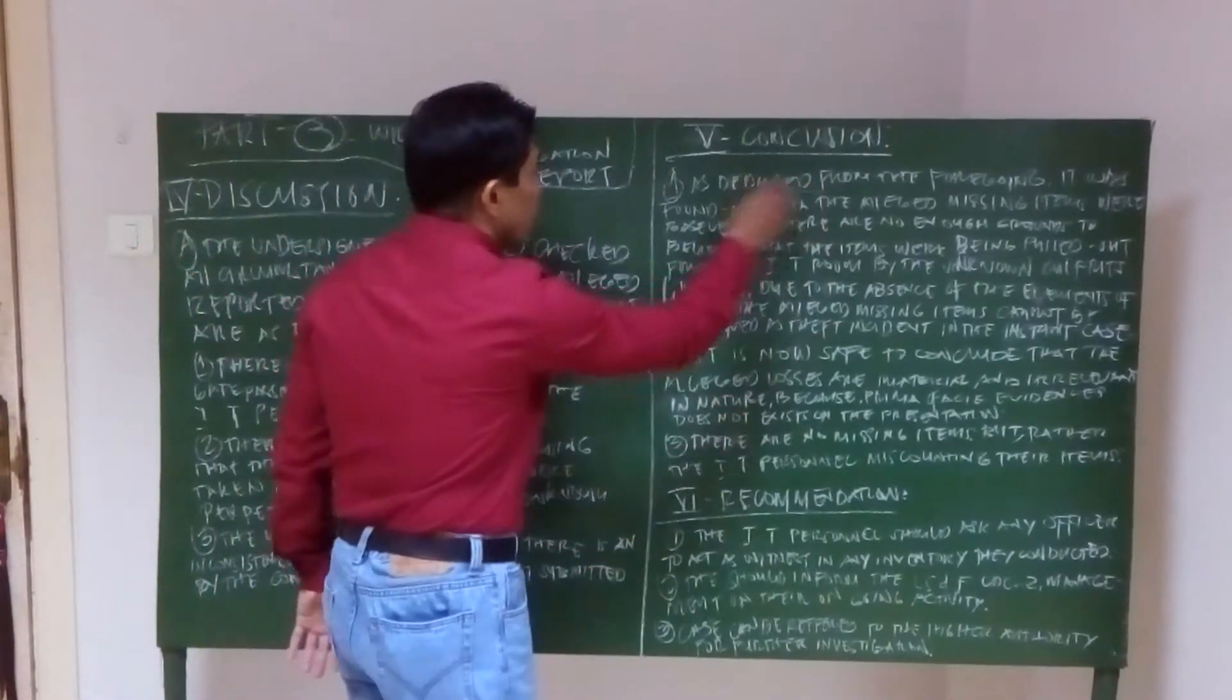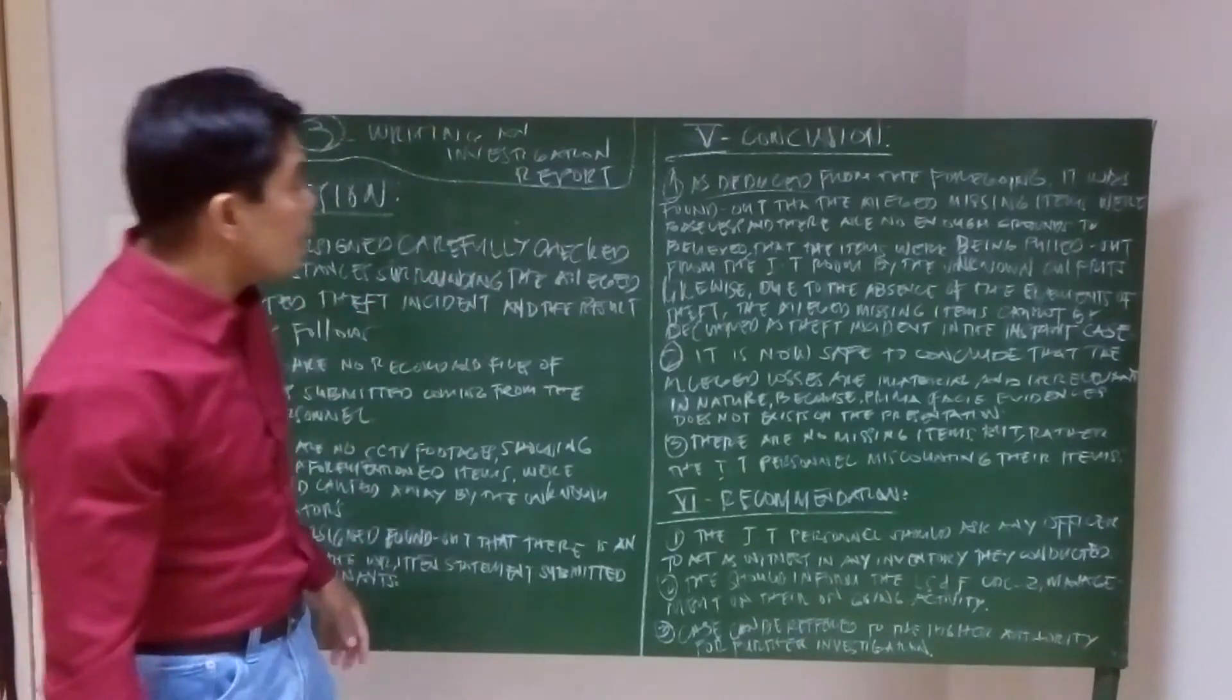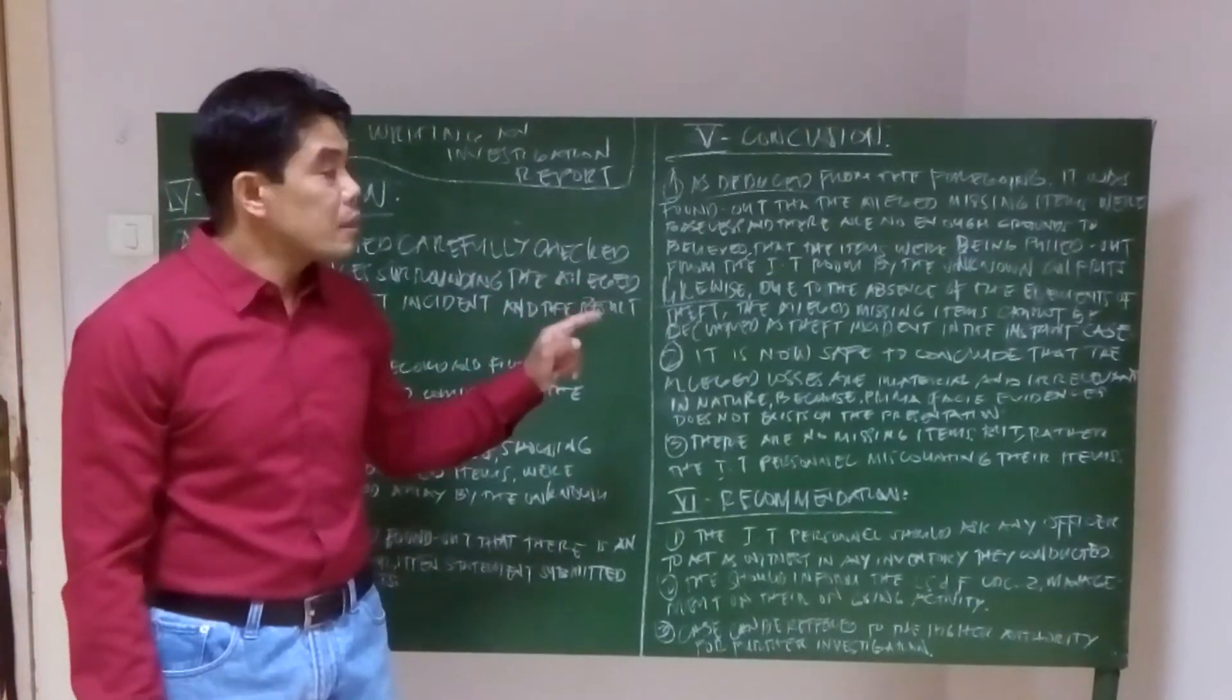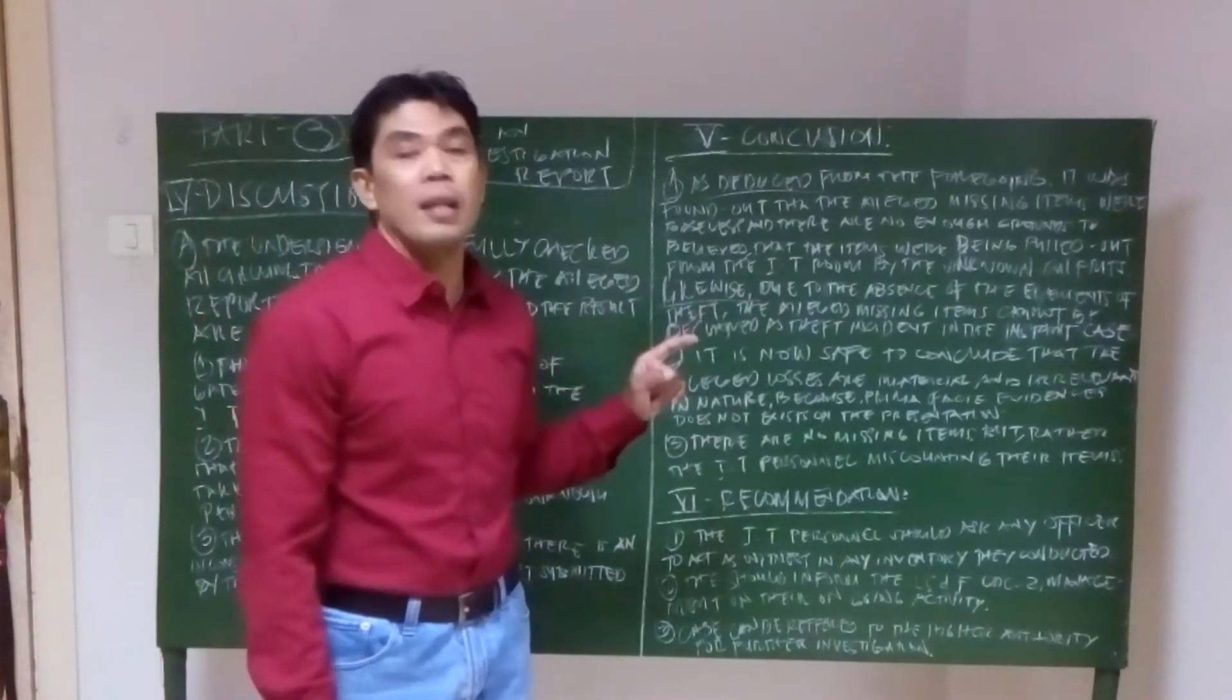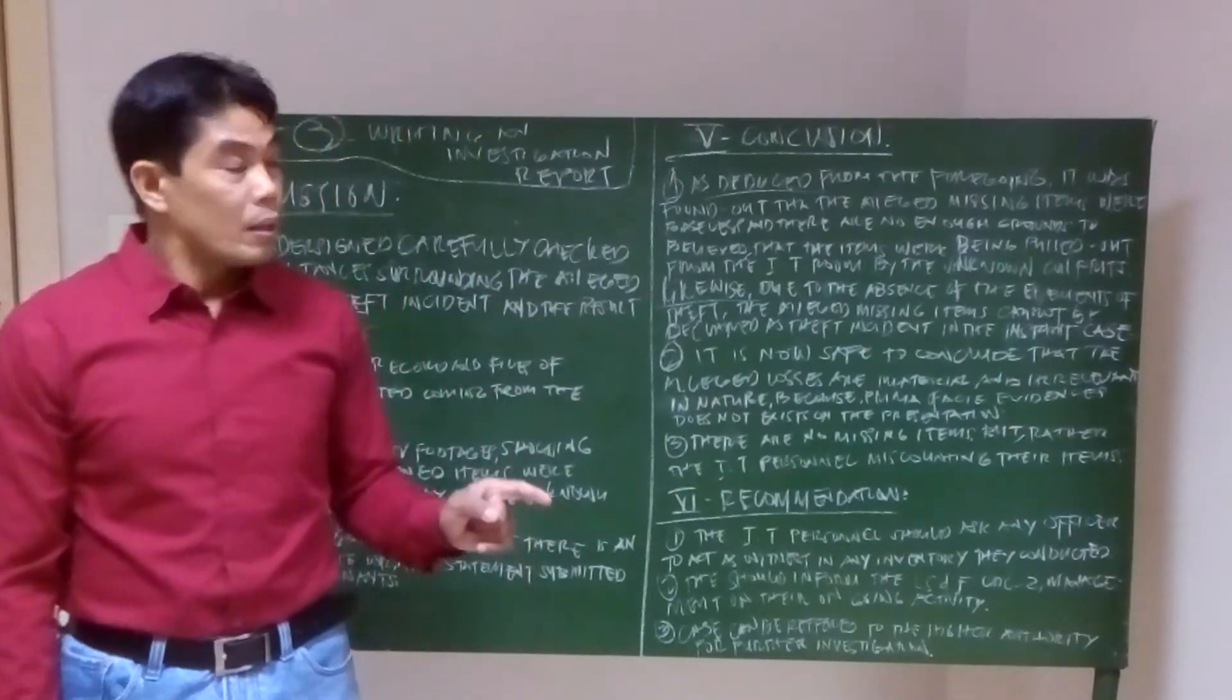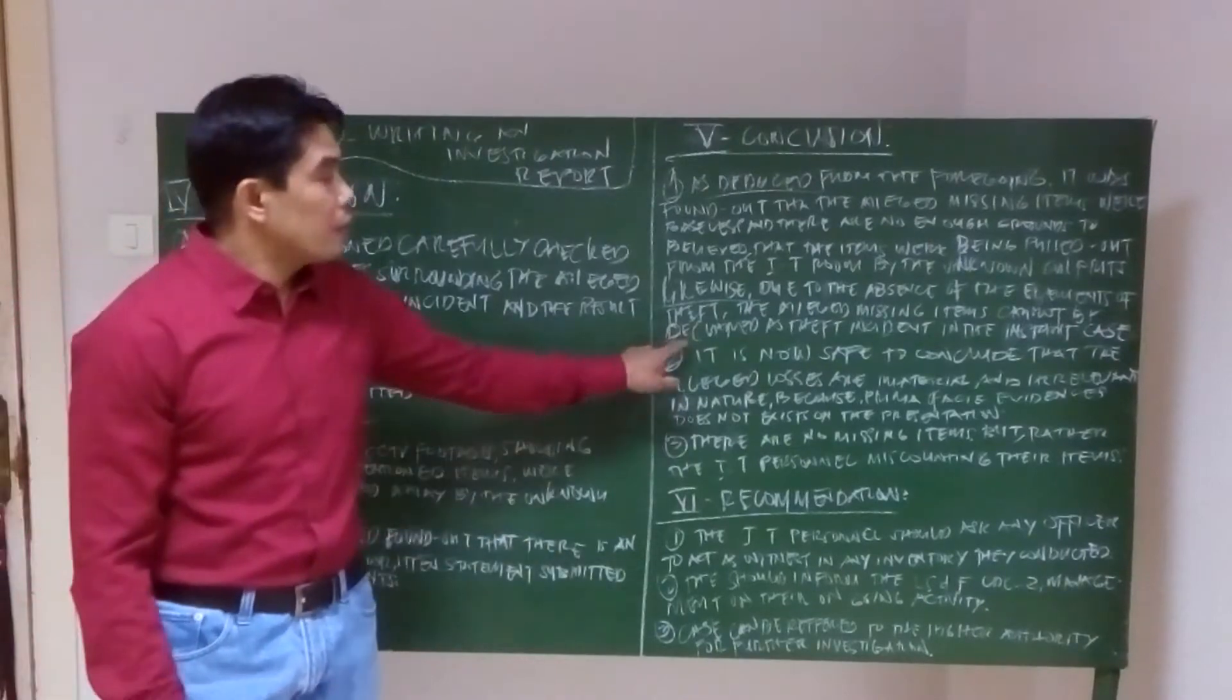You deduce from the foregoing facts from the possible case and the discussion. Likewise, due to the absence of the elements of theft, the alleged missing items cannot be declared a theft incident in the instant case. In our previous video, we discussed the elements of theft. Now in this instant case, the elements of theft are absent, so we cannot declare theft based on the facts of the incident and the discussion.